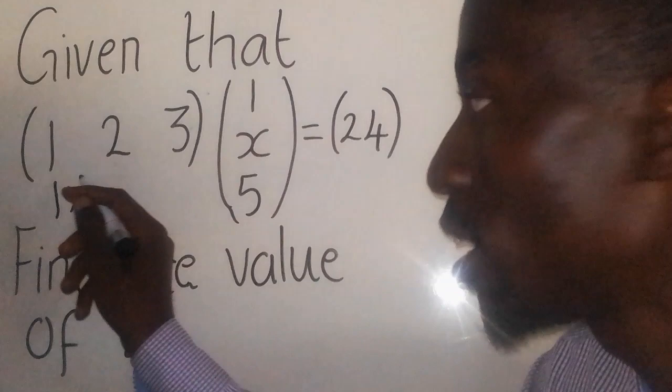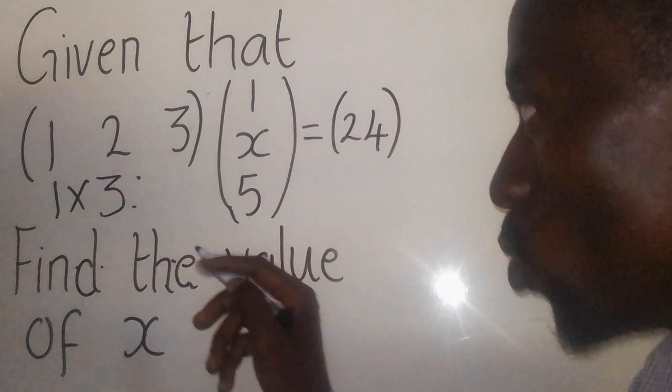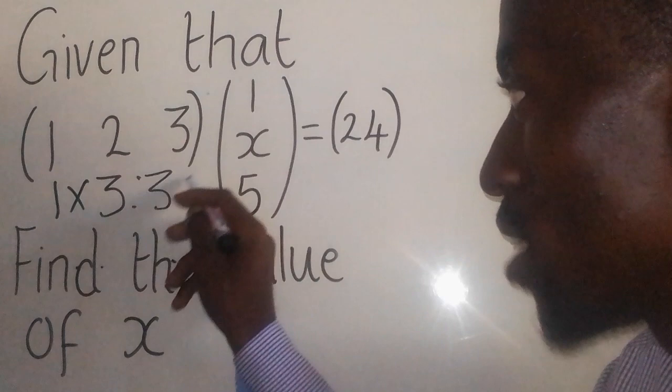This is one row, so we say one. Now the number of columns: you have one, two, three - so we say three. Then this one, count the number of rows: one, two, three - three. Then the number of columns - one.